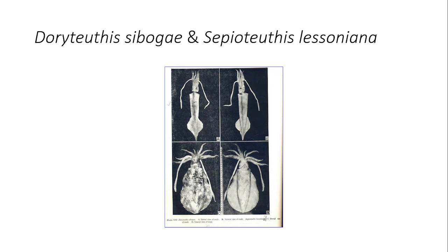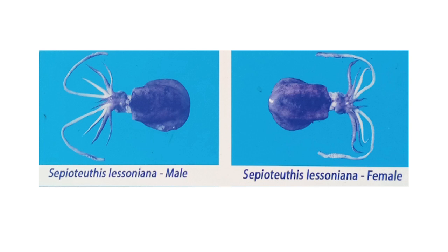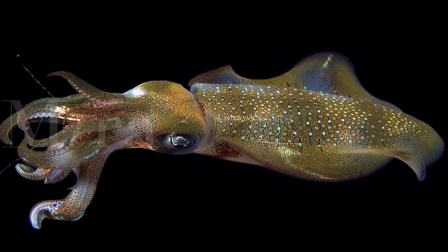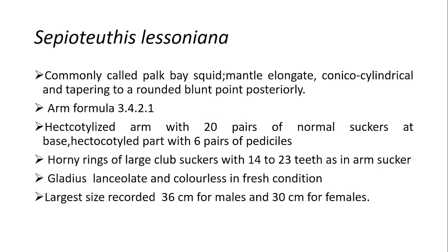These are the photographic images of Doriteuthis sibogae and Sepiotuthis lesiana. Next we move to the images of Sepiotuthis lesiana, including male and female differentiation and deep oceanic squid images. Squids uniquely have a squid pen — the gladius. The other name for this structure is the gladius. Shown here is the gladius of Doriteuthis sibogae.